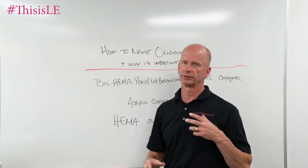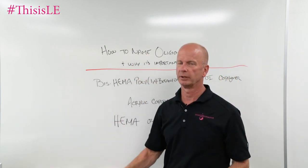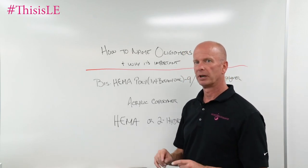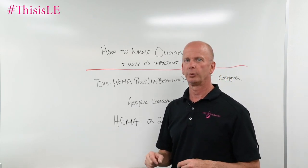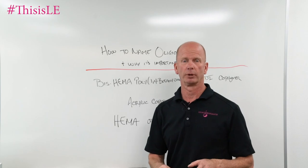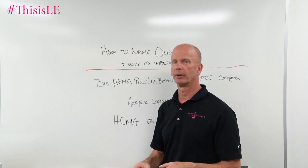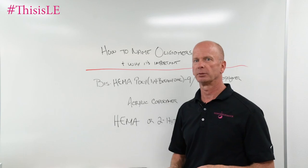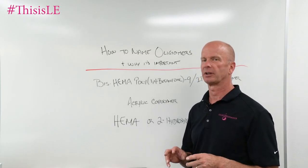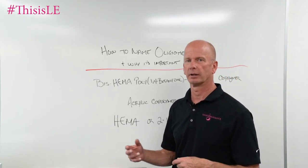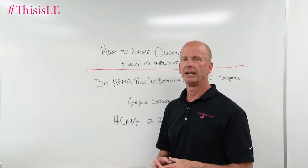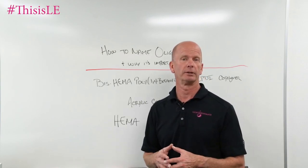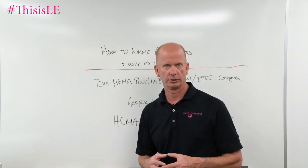What are oligomers? Those are just really big blocky resins that we have a tendency to use when we make gel products. But how do we name them and why is it important? We name them based on the components that go into them, and the reason why it's important is because a lot of times when we name an oligomer, it contains some names that you typically might not want to find in your gel.